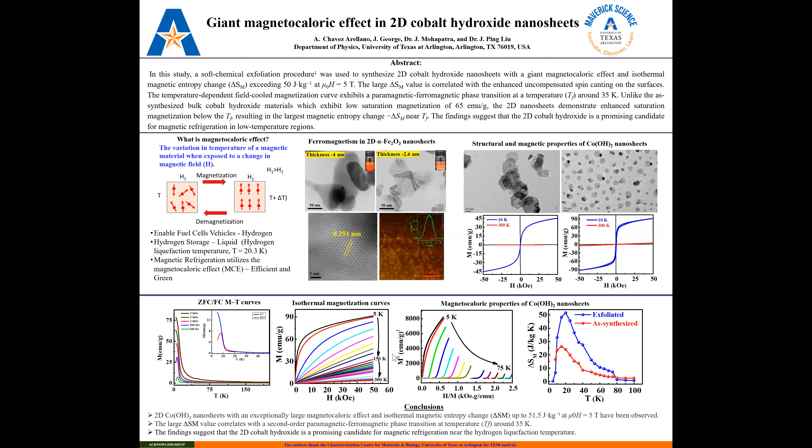In summary, the 2D cobalt hydroxide nanosheets have an exceptionally large magnetocaloric effect and isothermal magnetic entropy change of up to 51.5 joules per kilogram at a field of 5 Tesla. The large entropy change value correlates with a second-order paramagnetic-to-ferromagnetic phase transition at a temperature around 35 Kelvin. All findings suggest that 2D cobalt hydroxide is a promising candidate for magnetic refrigeration near the hydrogen liquefaction temperature.